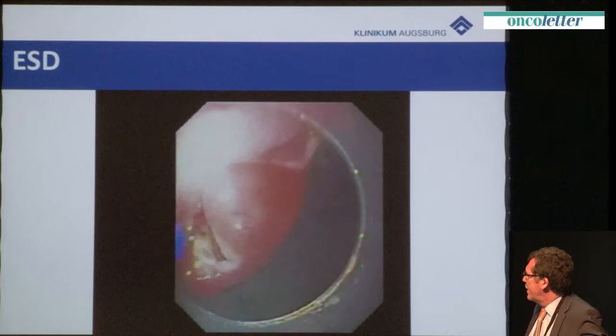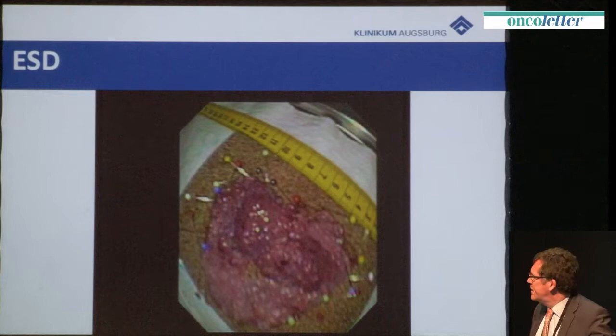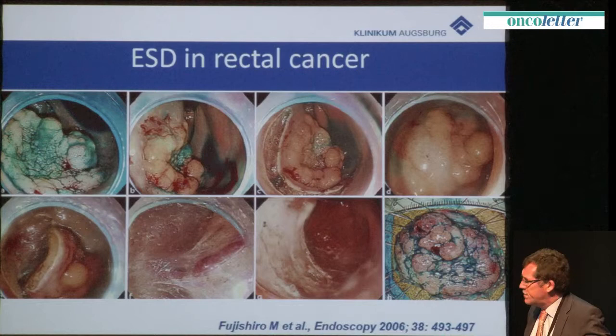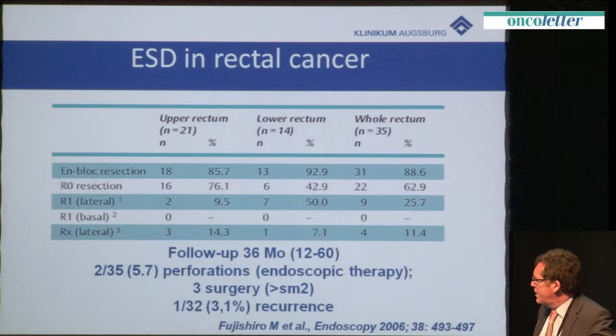This is the area behind the fold — about 10 cm resection — and the pathologist can tell you whether this lesion is completely resected. The first data came from Japan, the first paper on rectal cancer in 2006 with 35 cases. Initial en bloc resection was nearly 90% but curative resection was only about 60%. Follow-up of three years showed only one recurrence. There were some perforations, a problem for this technique, and some needed surgery due to deeper submucosal infiltration.